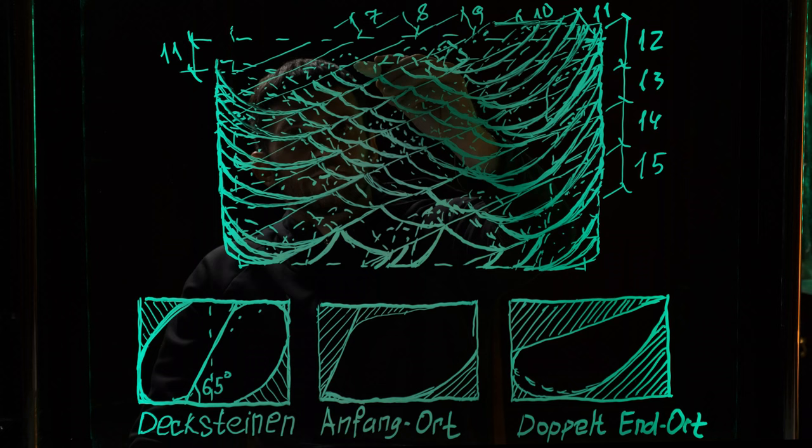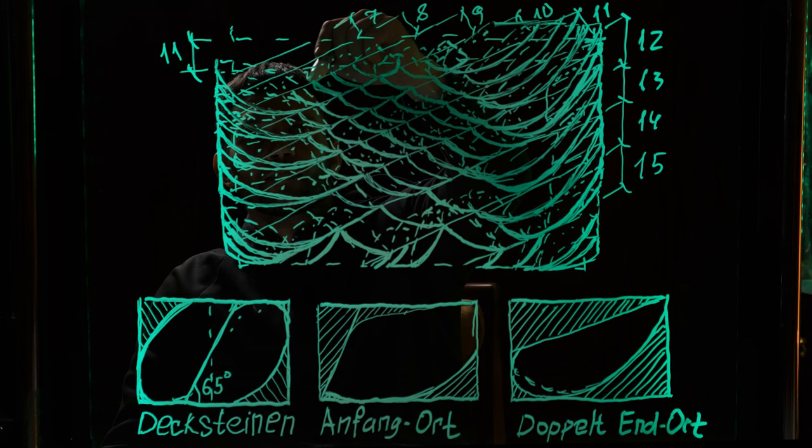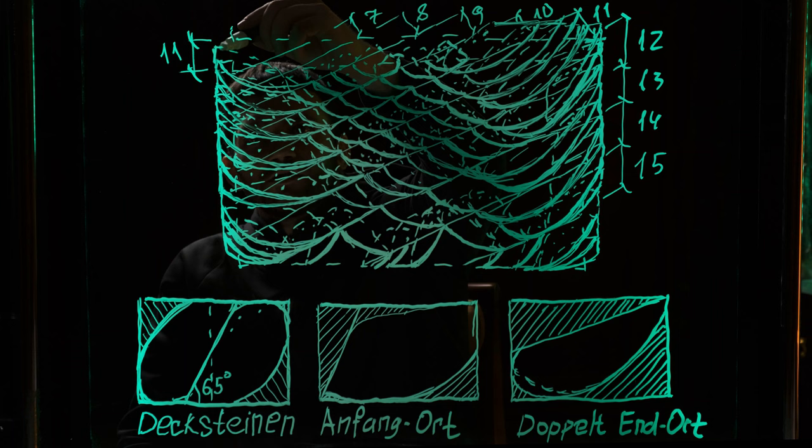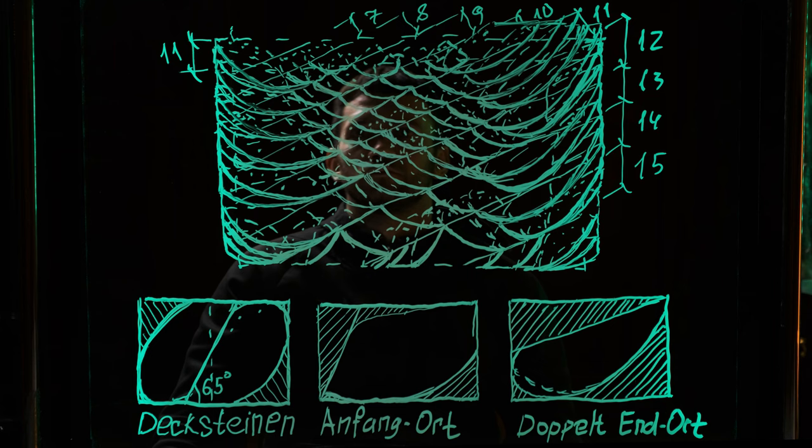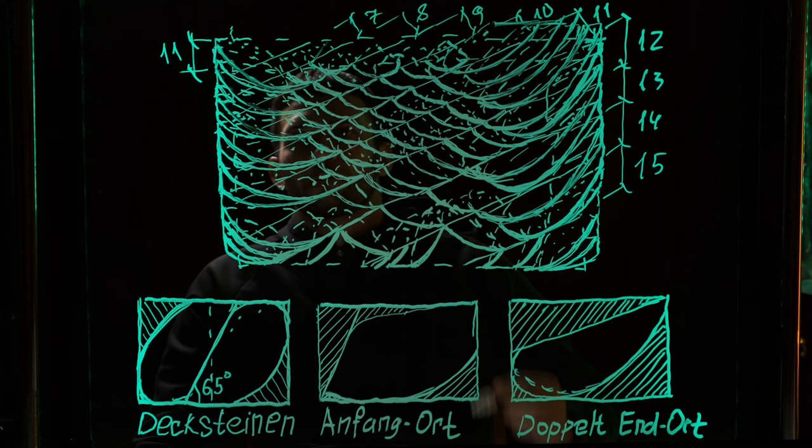And again we nail a row of Dexteins. We have come to the ridge line and are cutting the corner, as you already know. And this is already the last Anfang Ort. We nail the Stichstein. Ortstein. And we nail the Dexteins. Cut off the excess under the ridge. And that's it, now we are ready to nail the ridge row. We will also make a smooth transition from Anfang Ort to ridge row.